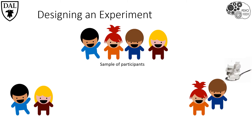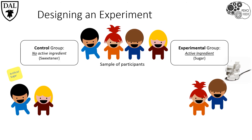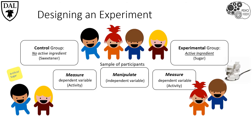The first group receives sugar, whereas the second group receives a sweet substance without sugar — in this case, artificial sugar. The group that received the active ingredient, sugar, we call the experimental group, while the group that did not receive the active ingredient but instead received artificial sugar is known as the control group. At this point in our experimental design, we've just manipulated our independent variable. Our dependent variable measures the possible effect of the independent variable — it depends on the independent variable. So in both of our two groups, we're going to measure activity levels. This will allow us to see whether or not the sugar is causing a change in the activity level.